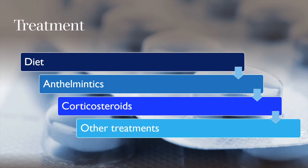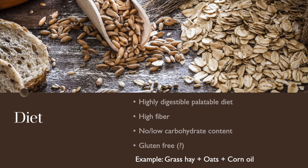For the treatment, the main categories for IBDs are as follows. A highly digestible and palatable diet is recommended with high content of fiber and very low content of carbohydrates. Some authors also suggest using gluten-free diets because one hypothesis is that some horses with IBD may present a disease similar to celiac disease in humans. An example of a good diet is grass hay with oats and corn oil to provide an extra source of energy.